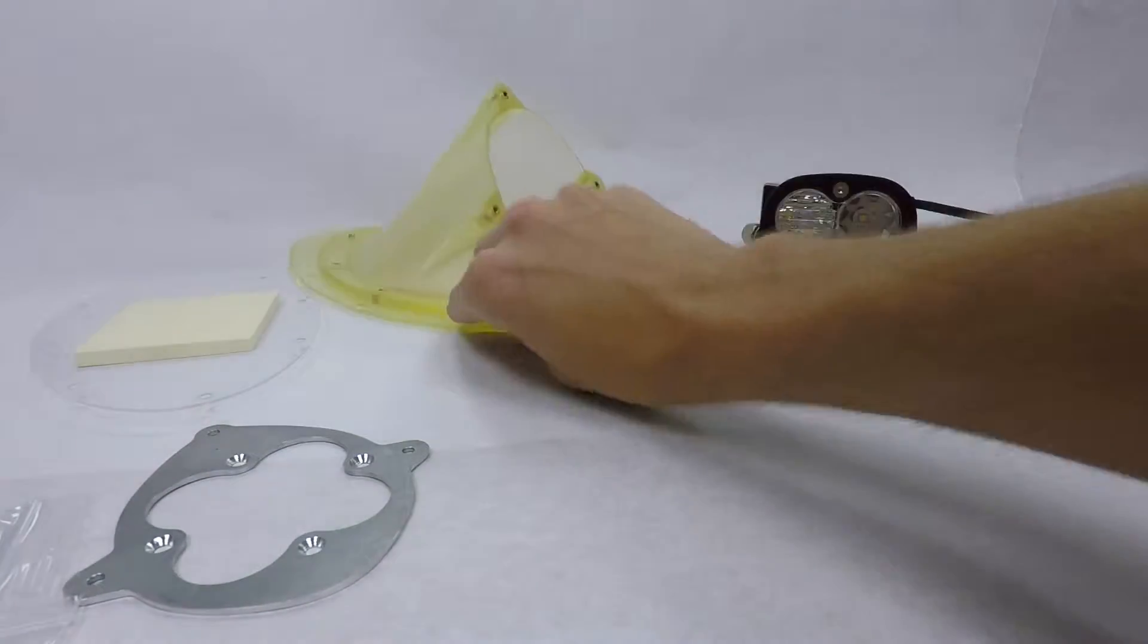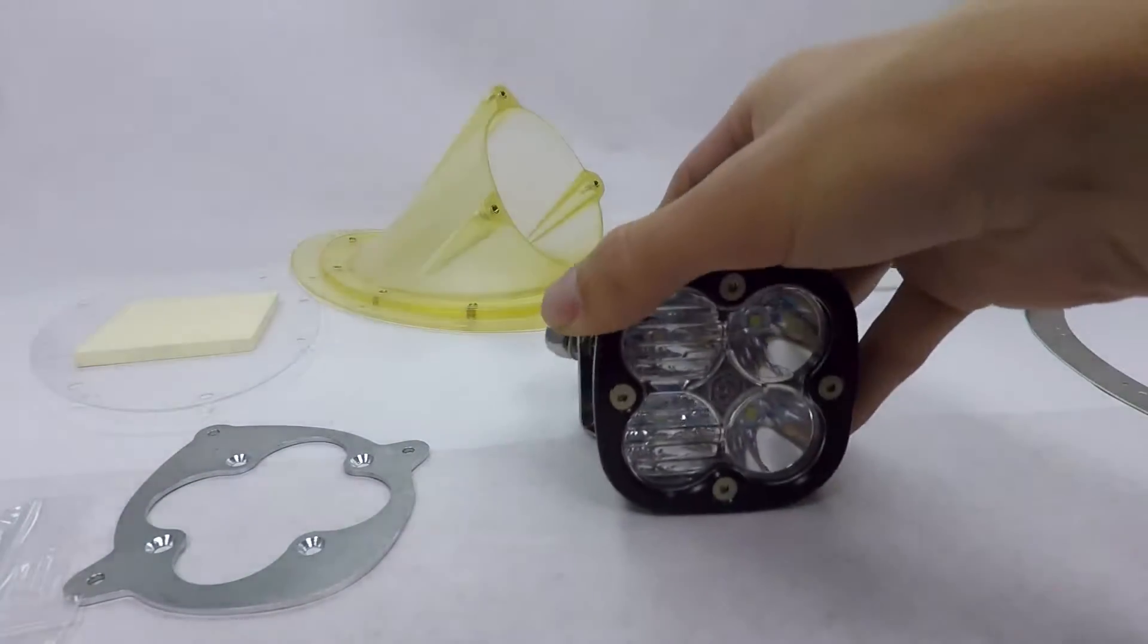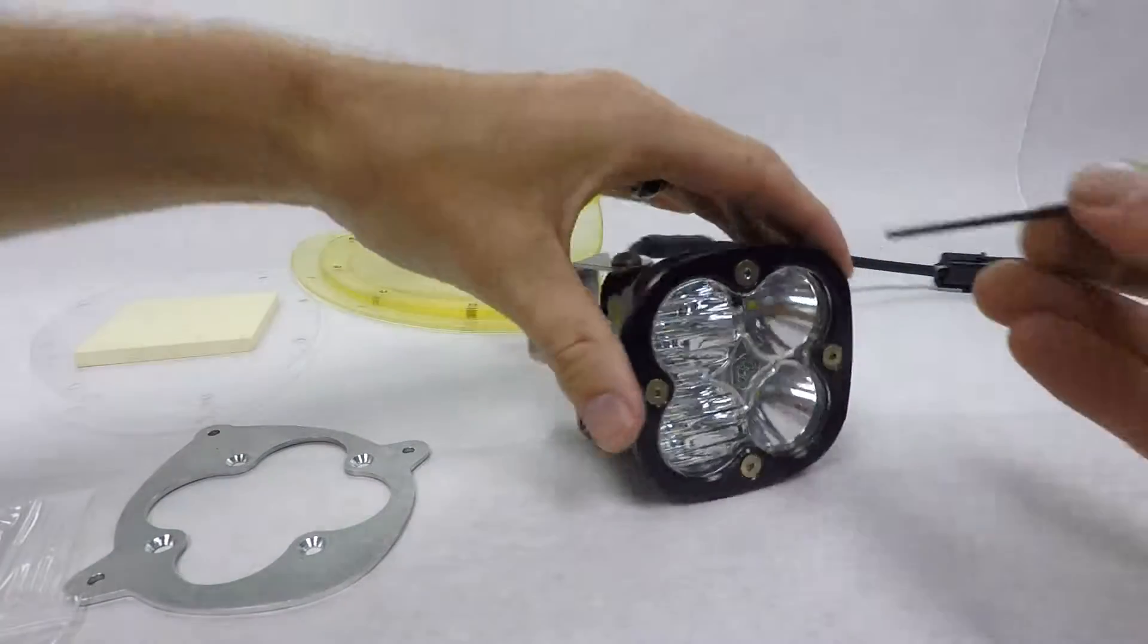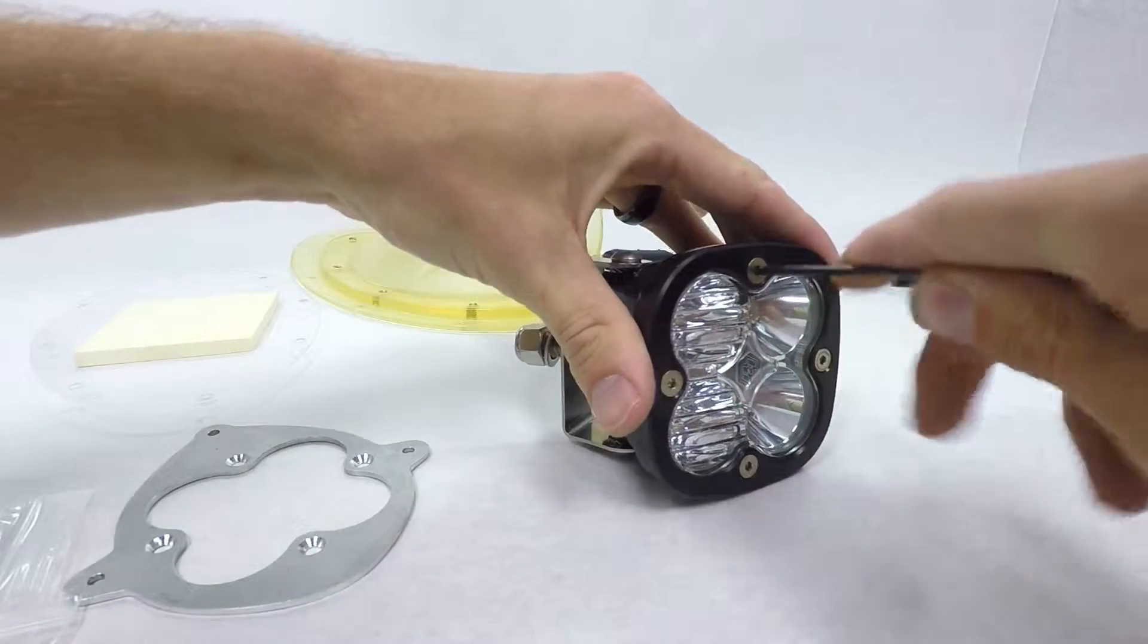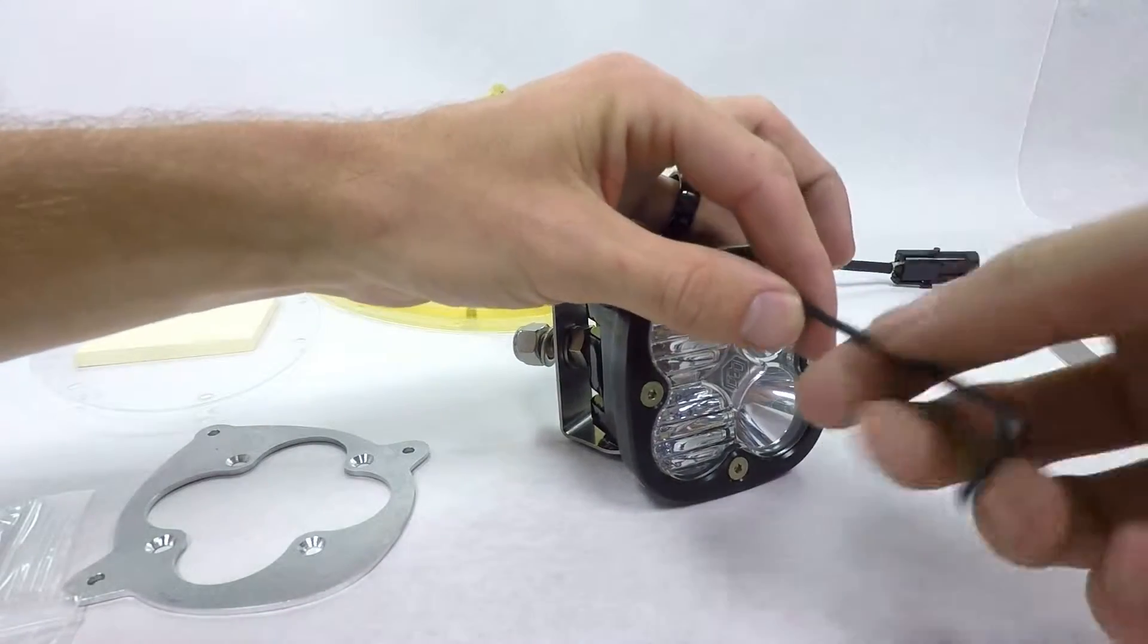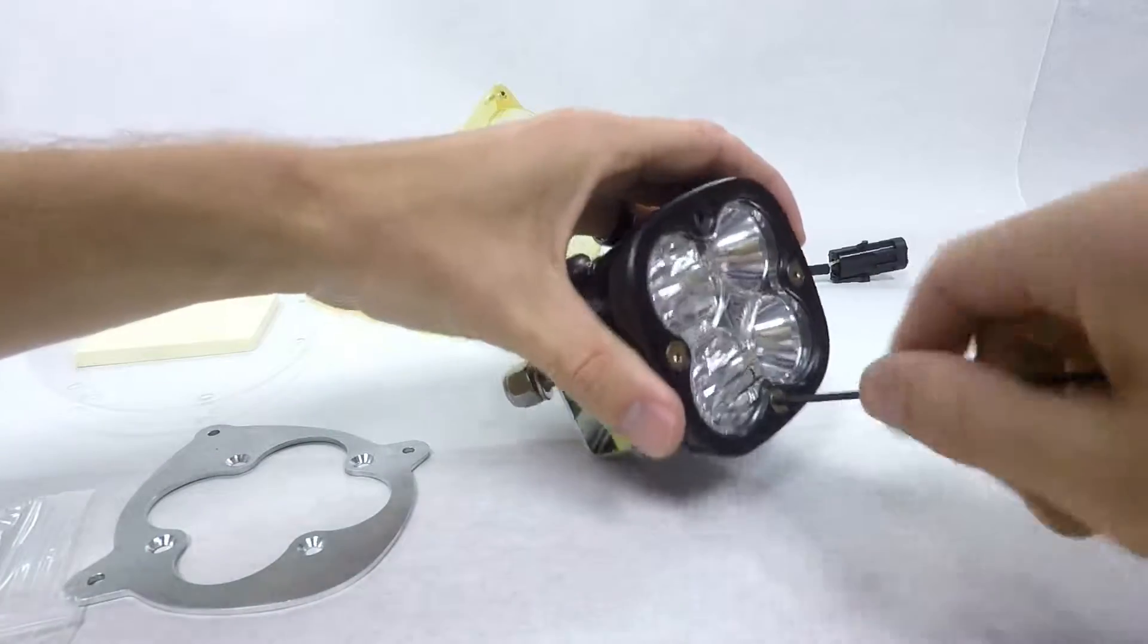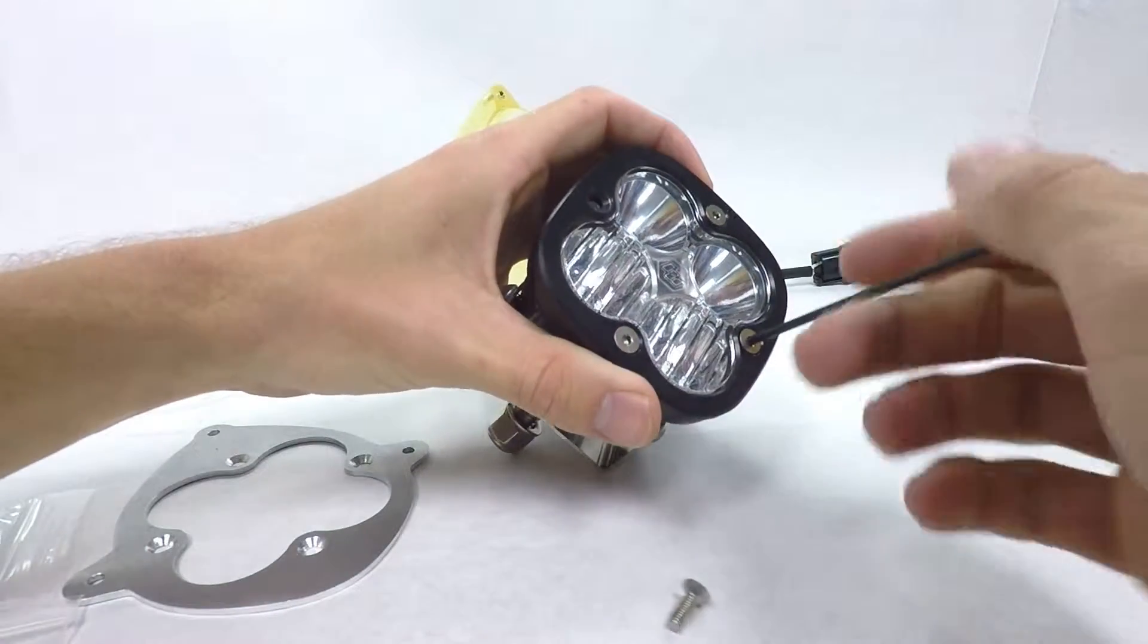First thing you're going to want to do is take this Baja bulb here. You're going to take the screws out of the stock bezel. These are a 2.5mm Allen wrench. They come out real quick and easy. First time they come out it might be a little sticky. They got a little thread lock on them.